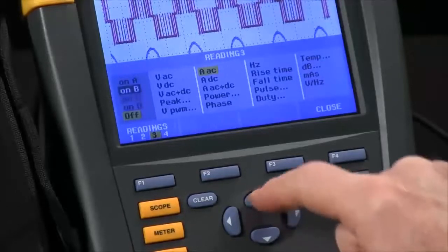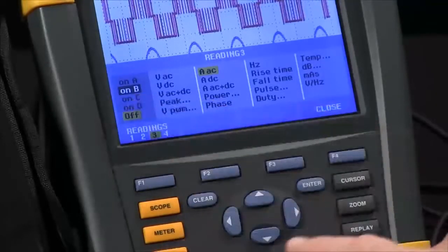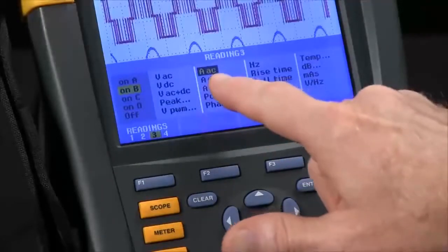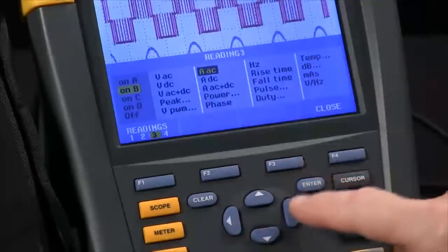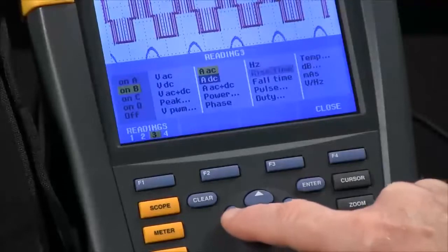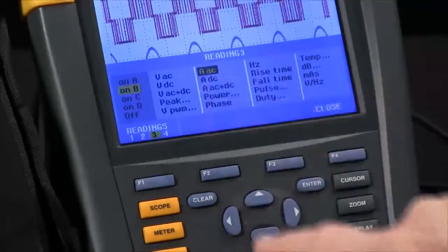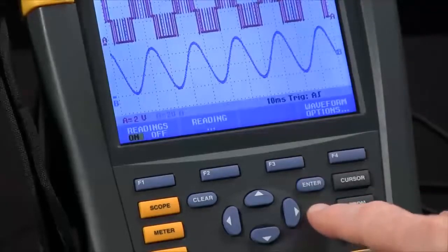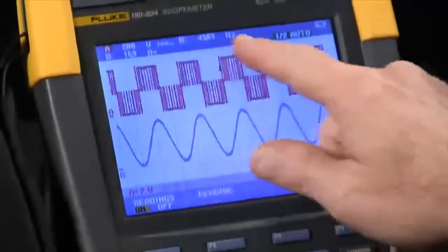We can arrow up, put it on channel B, hit the enter key, and then change that to read whatever we like. In this case, we'll go with amps AC. We'll hit enter. And now you can see three readings up here in the top of the screen.